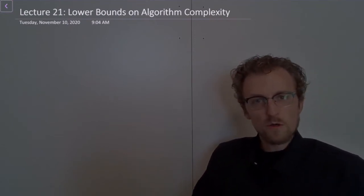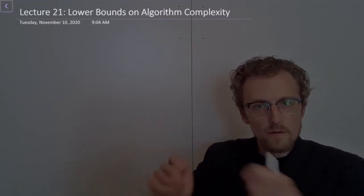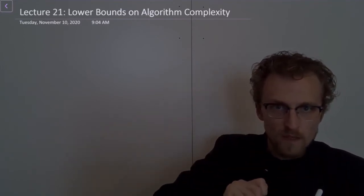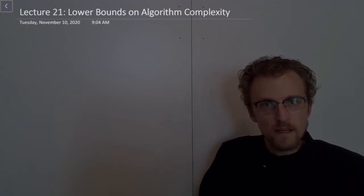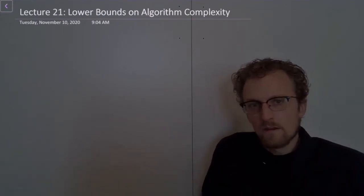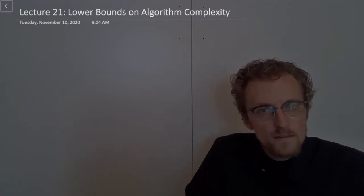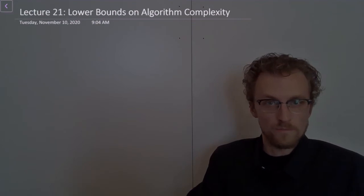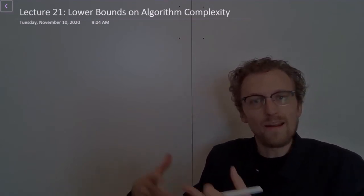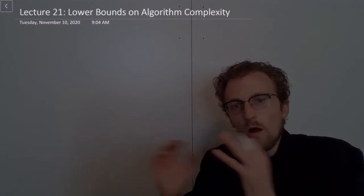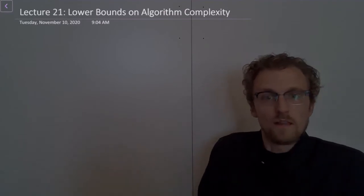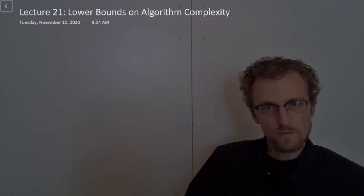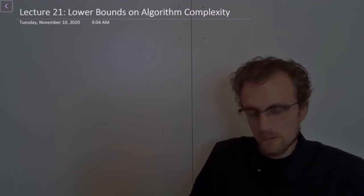Welcome back to Algorithms. The focus in this course so far has been essentially the following: here is a problem, for example sorting — sort n numbers — and here is an algorithm that solves the problem. Now let's analyze this algorithm and figure out how fast it is. What we have not focused on is the question: how fast can n numbers be sorted? We've thought a lot about how to analyze a given algorithm, but not about how to analyze a given problem and think about the set of all algorithms that solve it.